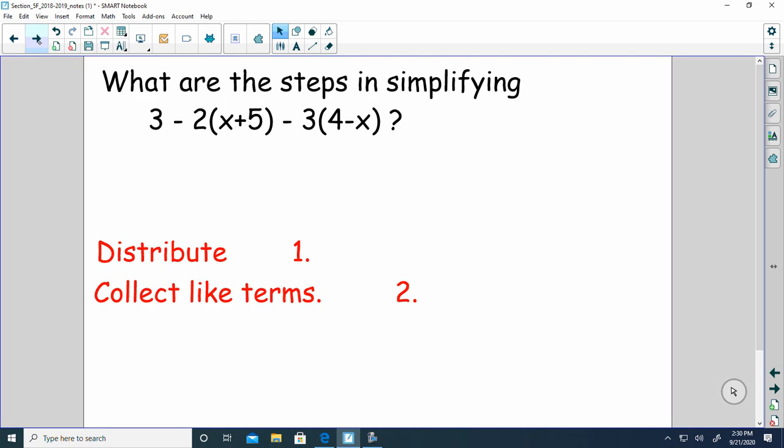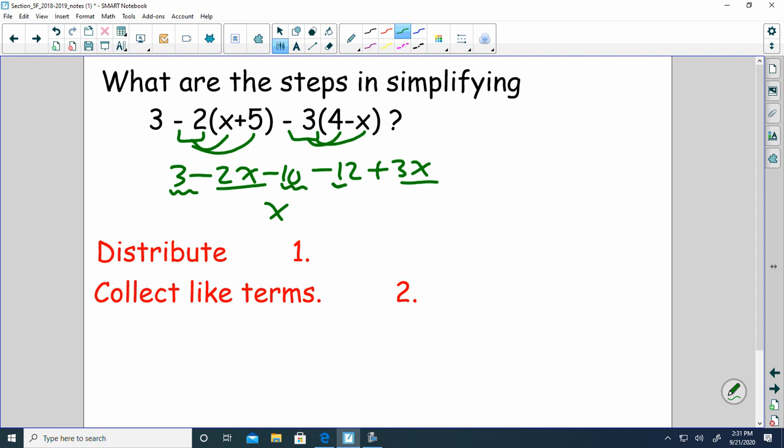What is the first step on this problem? I need to distribute negative 2 to both of those first and then distribute negative 3 to both of those and then combine your like terms. It's negative 22 plus 3 is negative 19. That's our answer. So distribute the number before parentheses and then combine like terms.